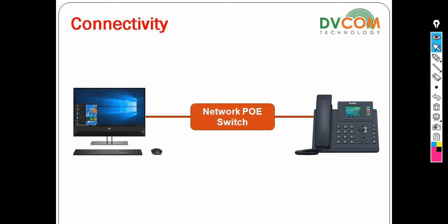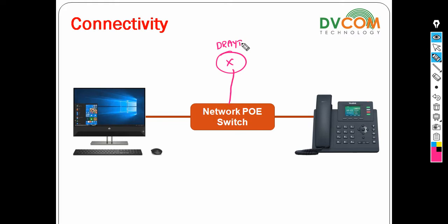Behind the scenes, DHCP is running in my router, and my router is also connected directly to my POE switch. The connectivity is like this: I have a DRATEC router where DHCP is running. The network is configured with 192.168.1.0 and the DRATEC router IP address is 1.1. My PC and my phone are both directly connected to my POE switch so they get IP addresses from DHCP.